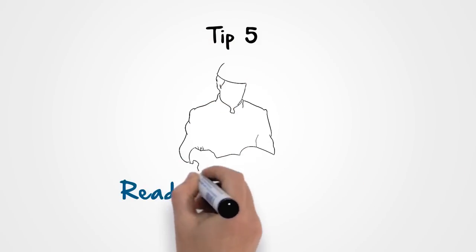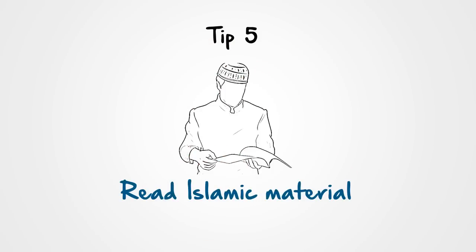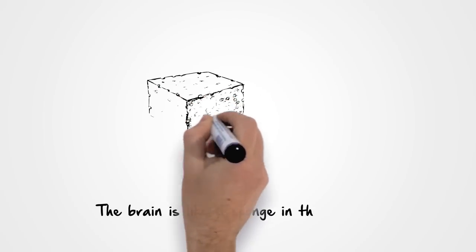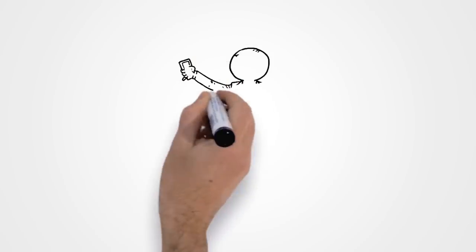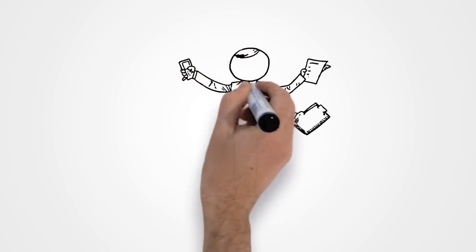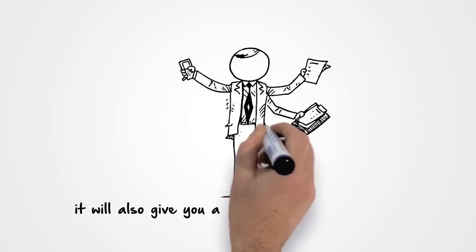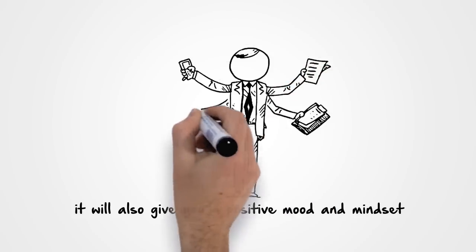Tip 5: Read Islamic Material. The brain is like a sponge in the morning so fill it with productive and positive food. Not only will you internalize the knowledge more at this time, but it will also give you a positive mood and mindset for the rest of the day.